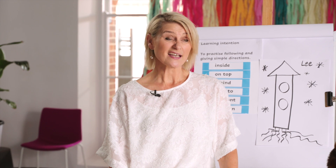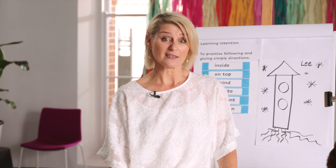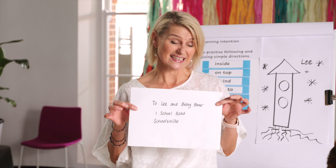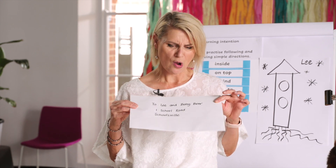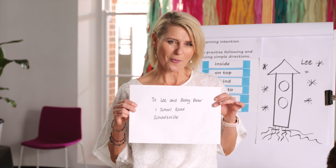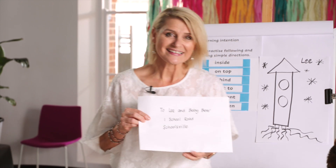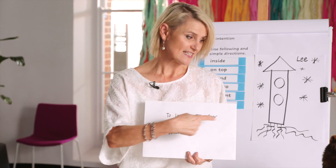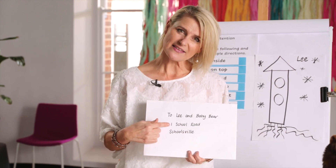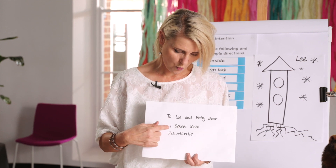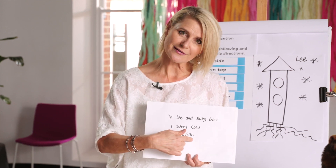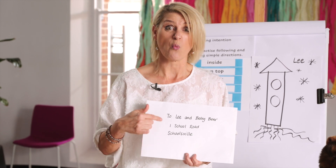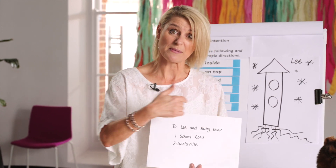Baby Bear and I just came back from collecting the mail from outside from our letterbox. I always feel so happy when I see that there's an envelope inside — a letter for us. Let's take a look. It says to Lee, that's me, and Baby Bear. Underneath there's an address: One School Road, Schoolsville. That's our address. That actually gives our postie information and directions for where to send the letter to make sure that Baby Bear and I get it.